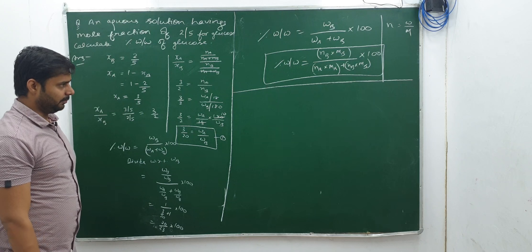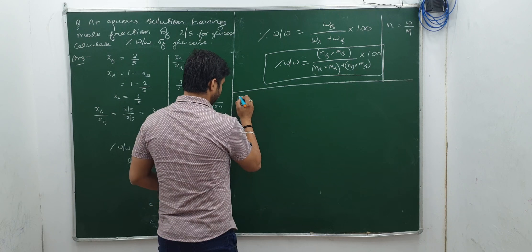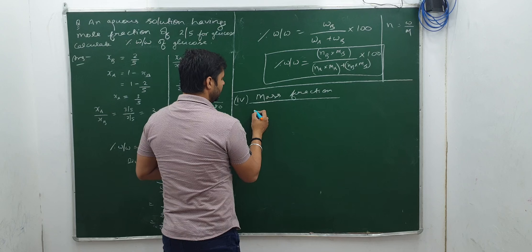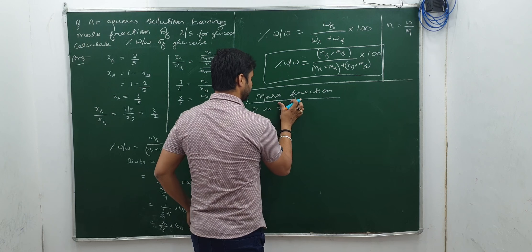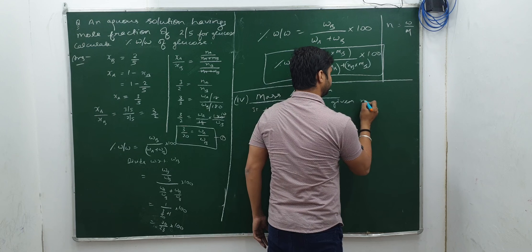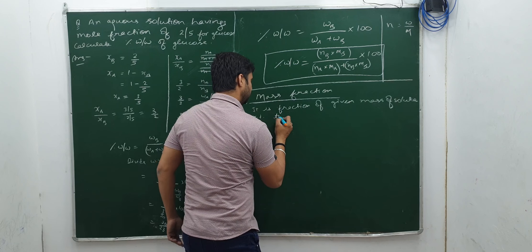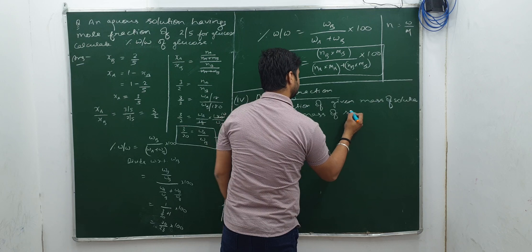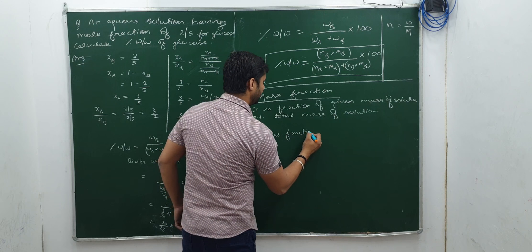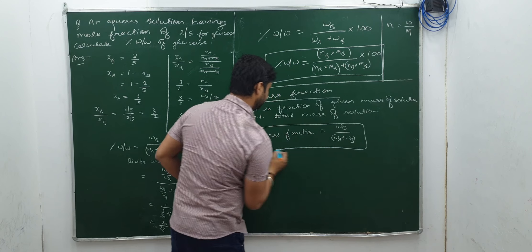Next point: mass fraction. It is not a very big thing but sometimes it is asked in questions. Term number four — mass fraction — is very rarely asked but you must know the formula. It is the ratio of the given mass of solute with respect to the total mass of solution. So mass fraction = W_B / (W_A + W_B). So easy.